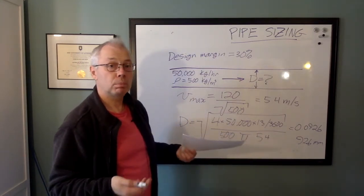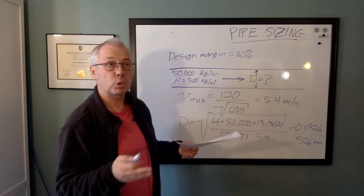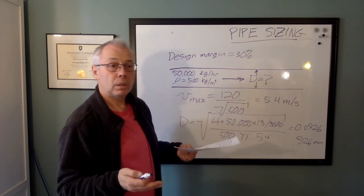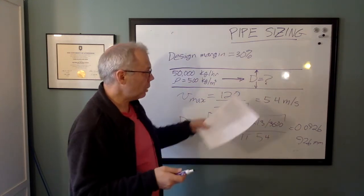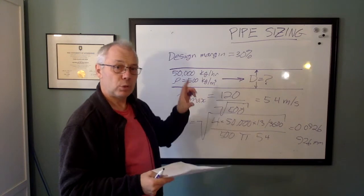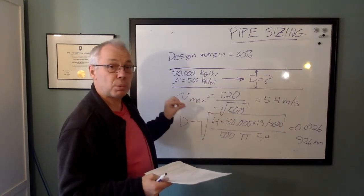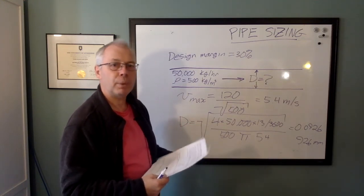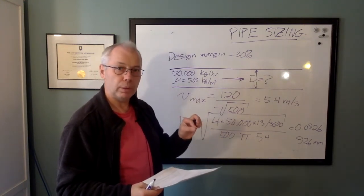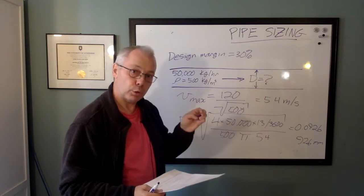So a 4-inch pipe, which has an inside diameter of just over 100 millimeters, will work just fine. It will give us the right velocity. So that would be the right pipe size using a maximum velocity as a criteria. That's criteria one. What about pressure drop? Let's take a look at that.